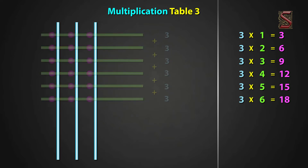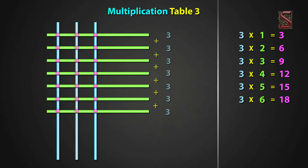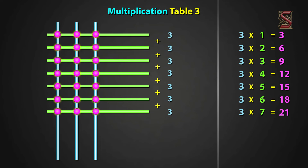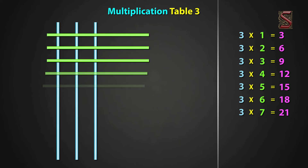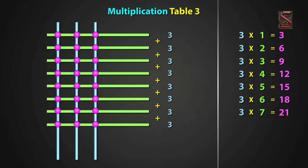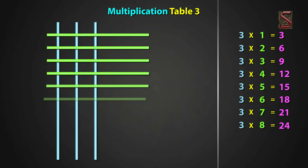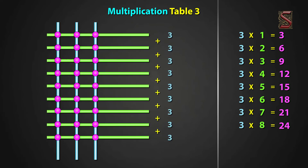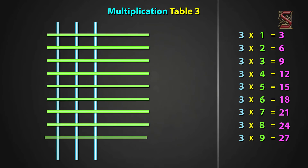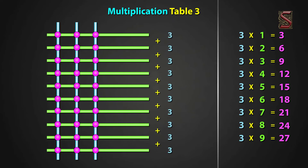3 seven times, draw 7 sleeping lines. We have 21 meeting points. So, 3 seven times equal to 21. 3 eight times, draw 8 sleeping lines. We have 24 meeting points. So, 3 eight times equal to 24. 3 nine times, draw 9 sleeping lines. We have 27 meeting points. Now, 3 nine times equal to 27. 3 ten times, draw 10 sleeping lines. We have 30 meeting points. Now, 3 ten times equal to 30.